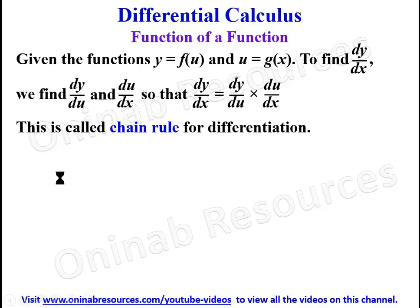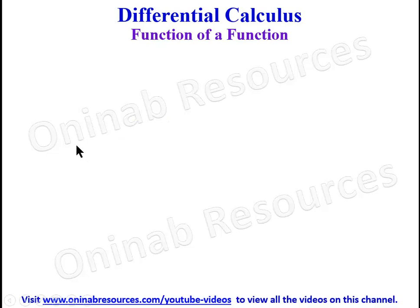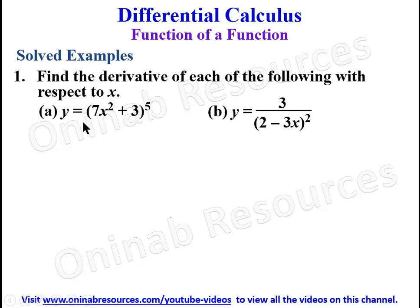We are going to look at some examples. For example one, find the derivative of each of the following with respect to x: (a) y = (7x² + 3)⁵, and (b) y = 3 / (2 - 3x)², all to the power of two.